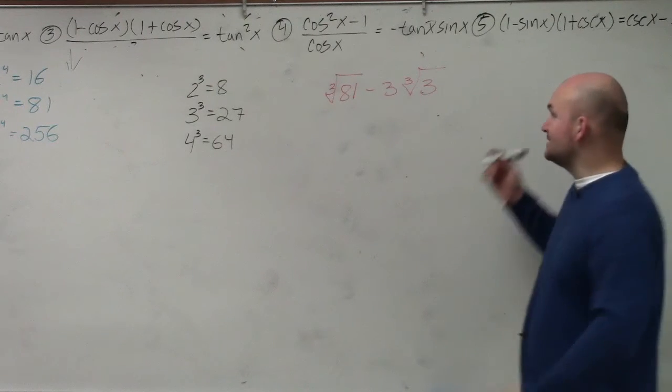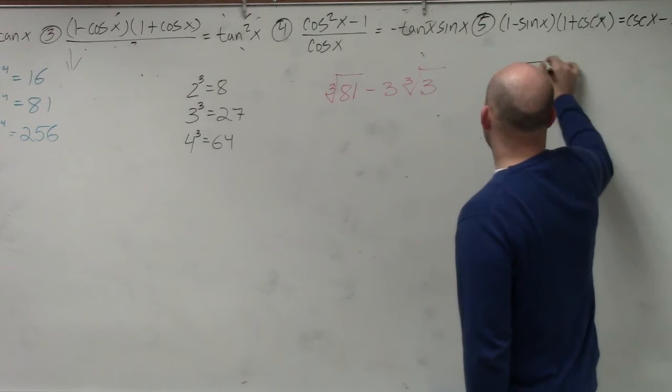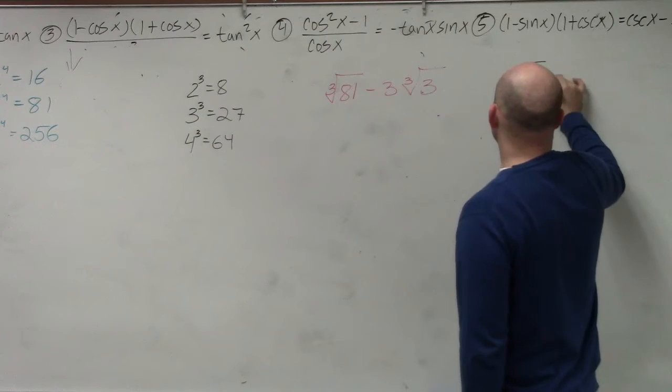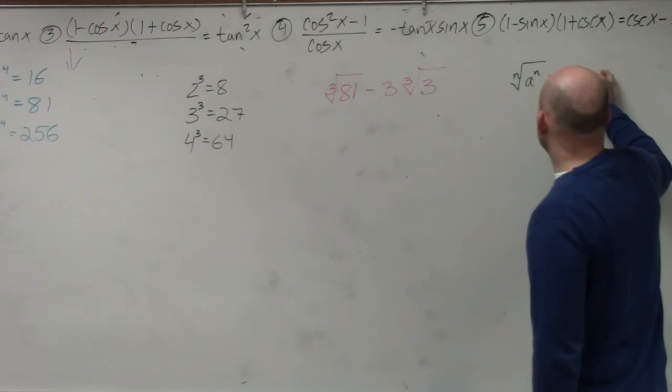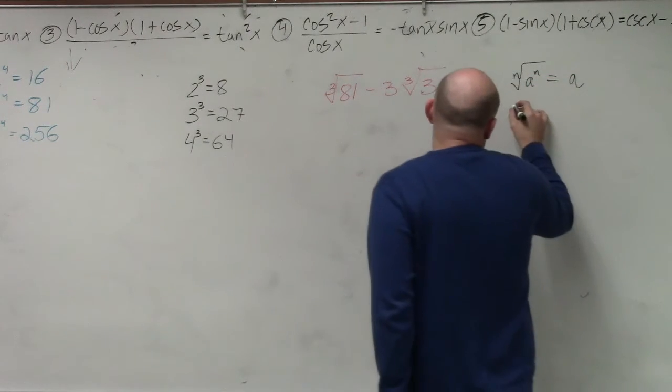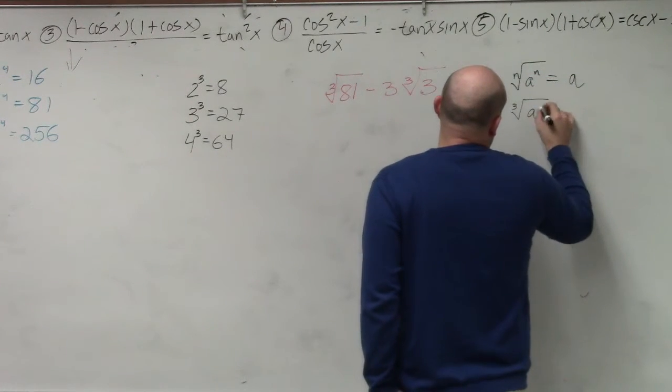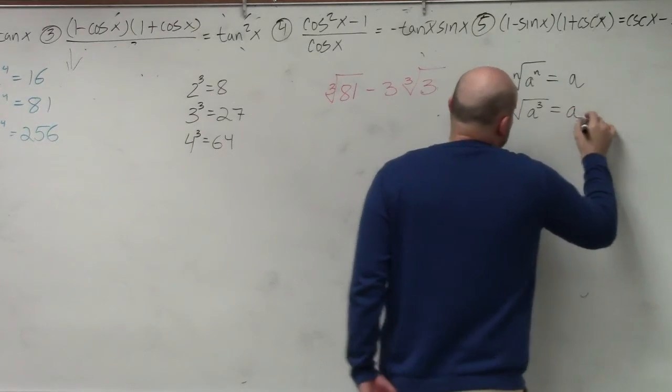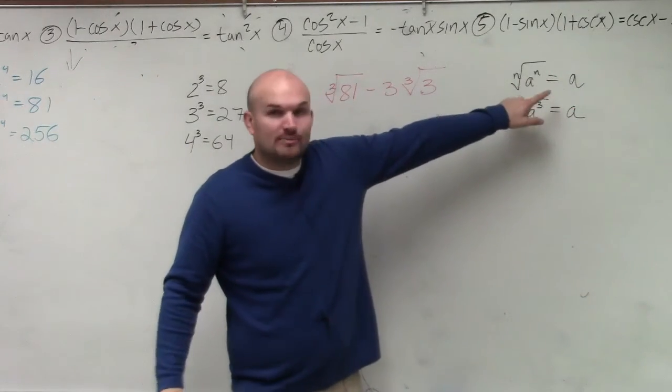And that's very important to recognize because our identity element, which we started this chapter out with, the nth root of a to the nth power is equal to a. So if I'm dealing with an index of 3, that means I want to get my numbers or variables inside to be something to the third power.